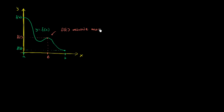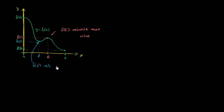We're saying relative because the function takes on other values that are larger than it. But for the x values near c, f of c is larger than all of those. Similarly, if this point right over here is d, f of d is a relative minimum point, or relative minimum value. f of d is a relative minimum, or a local minimum value.